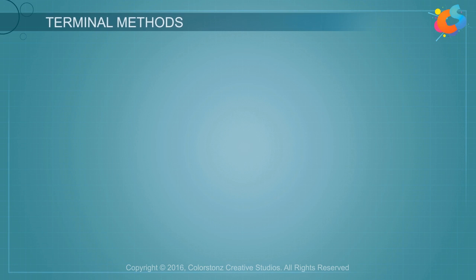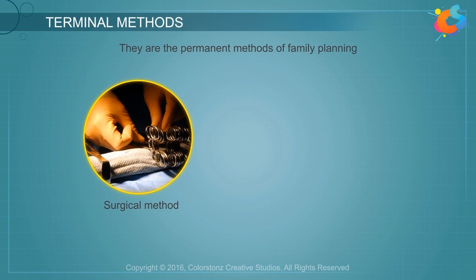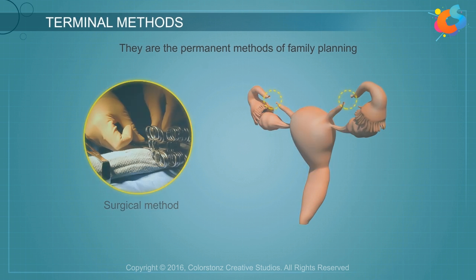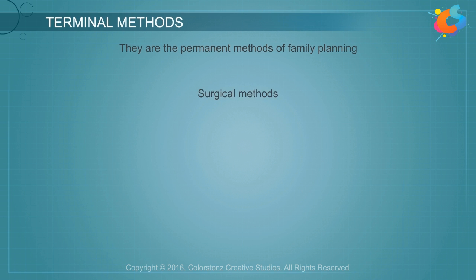Terminal methods are the permanent methods of family planning. A surgical method is applied, which is very effective and involves blocking the passage of ova or sperms. There are three types of surgical methods: vasectomy, tubectomy, and laparoscopy.